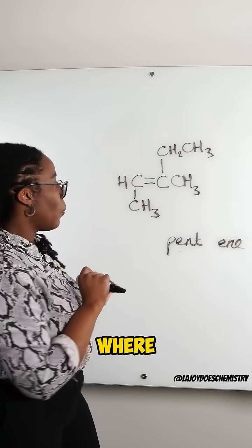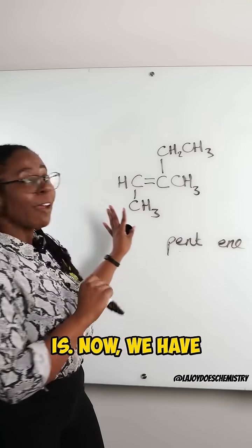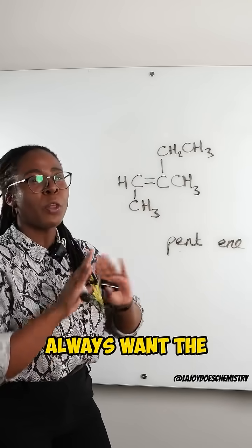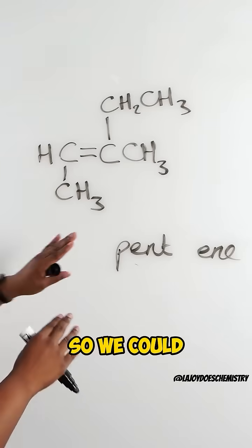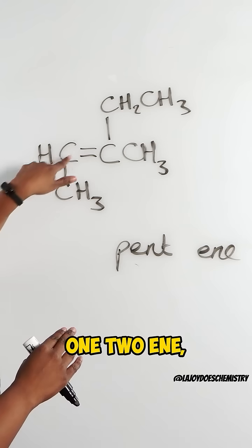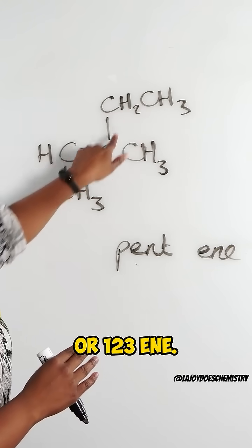And don't forget to position where that double bond is. Now we have two options and of course we always want the smallest possible number. So we could either have pent one, two ene or one, two, three ene.